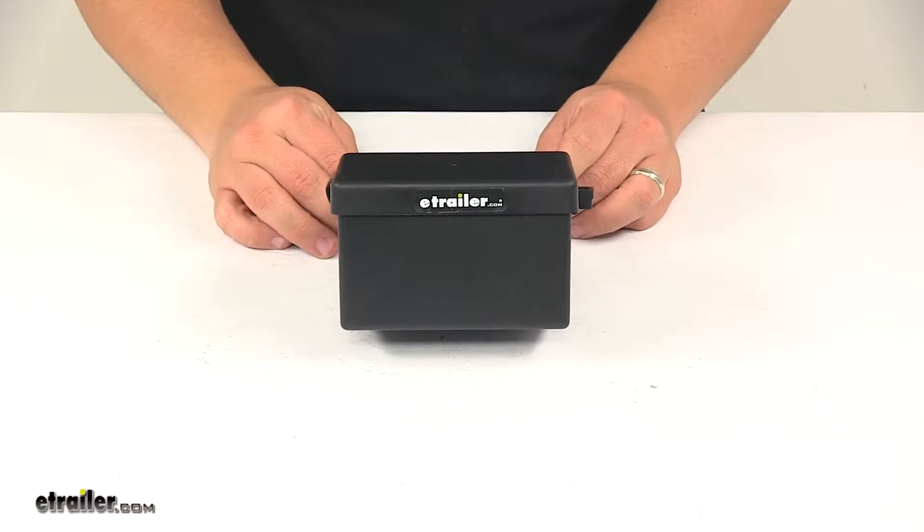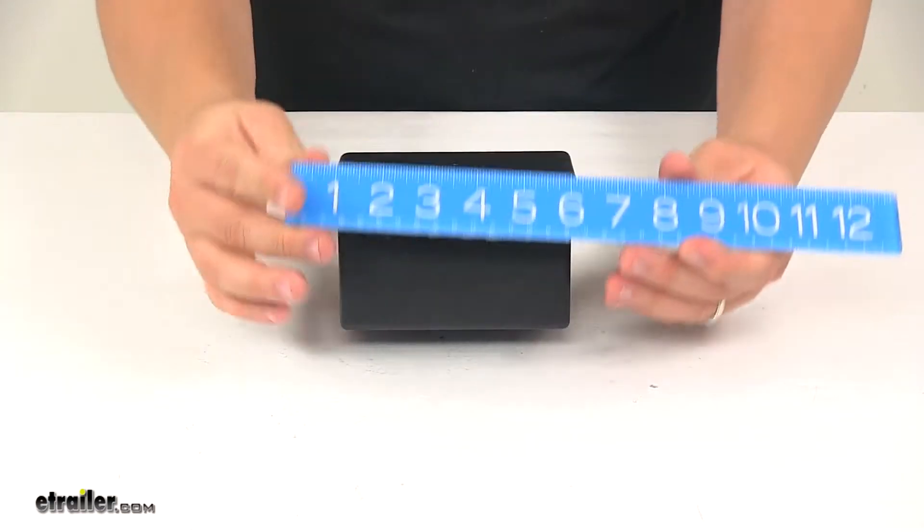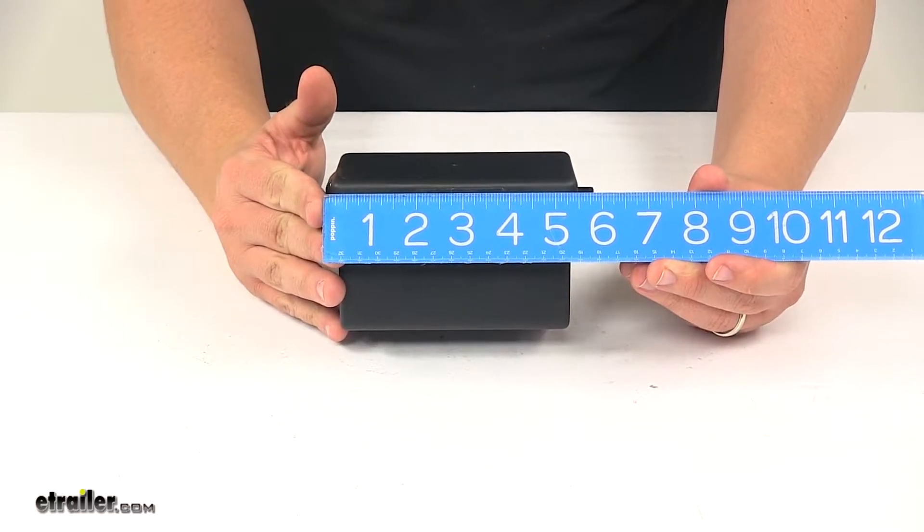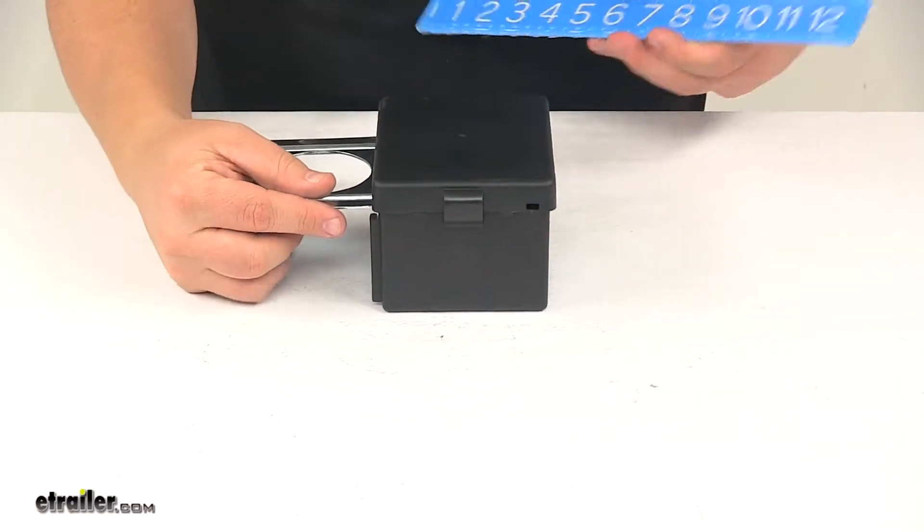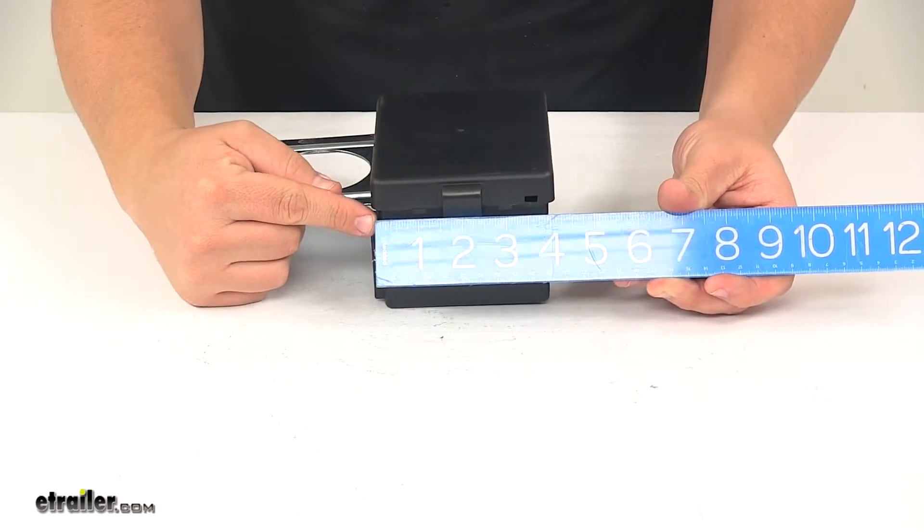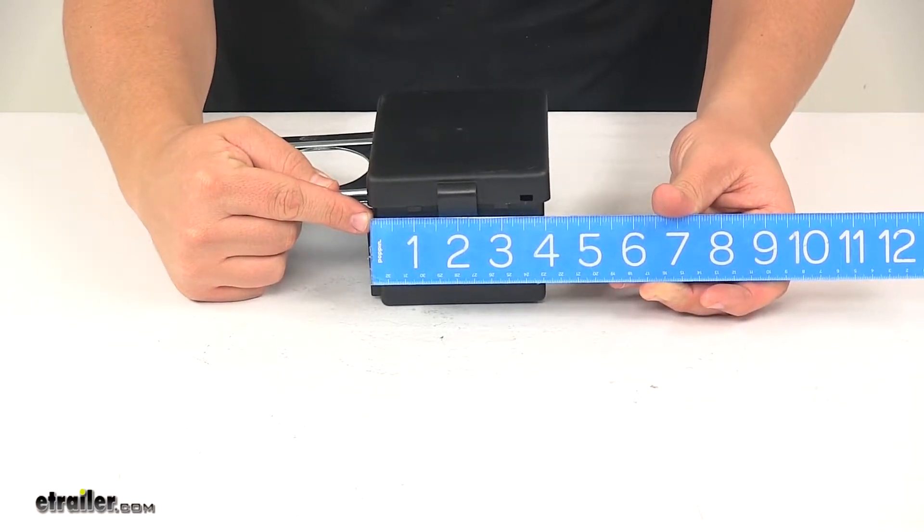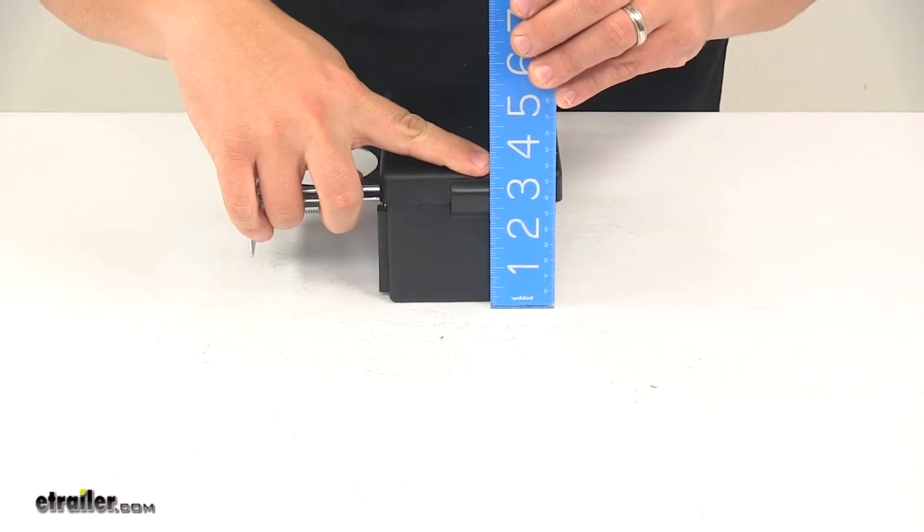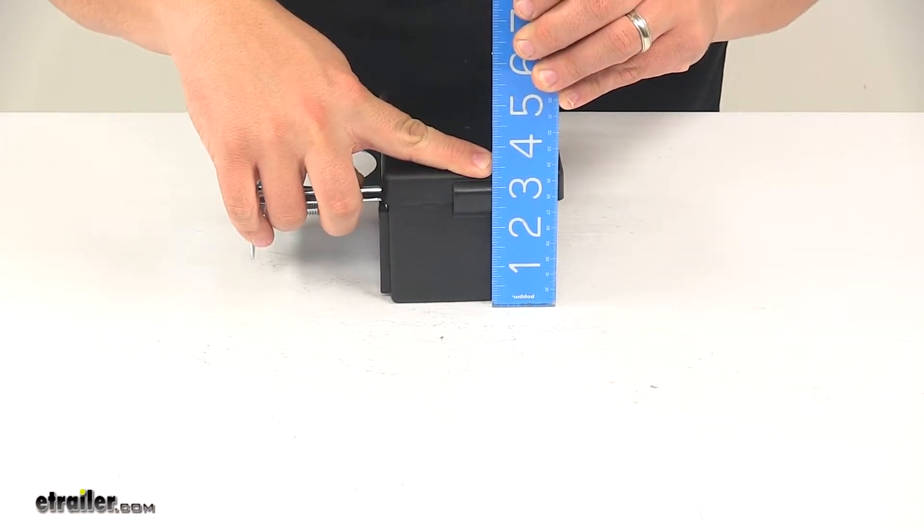Now taking a look at the overall dimensions, edge to edge this direction, just measuring the case portion is about five and three-eighths of an inch. The width of just the case portion measures about four and one-eighth of an inch, and the height is about three and one-quarter inches tall.